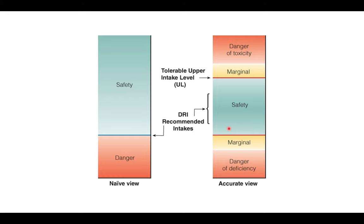The Dietary Guidelines for Americans also states that a healthy eating pattern limits saturated fats and trans fats to less than 10% of total calories; added sugars, also less than 10% of total calories; sodium or salt, less than 2,300 milligrams; and alcohol, one drink per day for women and two drinks per day for men.